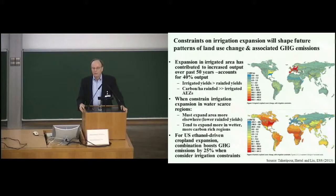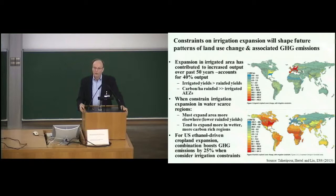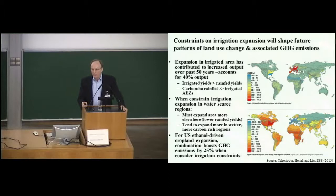If we reflect the International Water Management Institute's predictions of areas of physical water scarcity and constrain irrigation expansion accordingly, the pattern of land use changes significantly and emissions change dramatically. The reason: irrigated yields are on average much higher than rain-fed yields. If you don't allow expansion of irrigated area, you must expand rain-fed more. Rain-fed agroecological zones are more carbon-rich both above and below ground, resulting in more carbon releases — emissions go up by 25 percent. This is an excellent example of how economists get the answer wrong without interacting with the biophysical community.